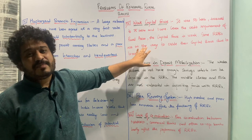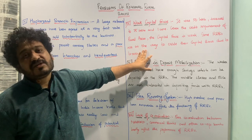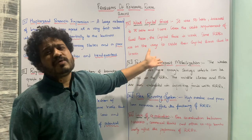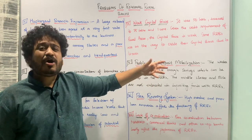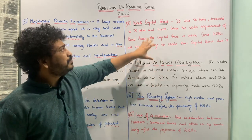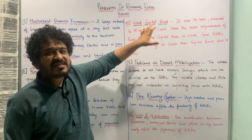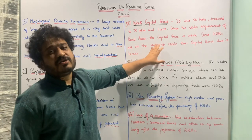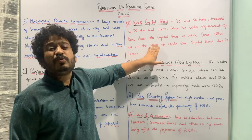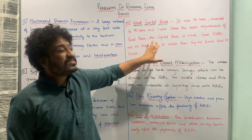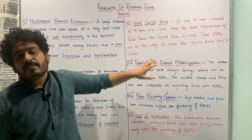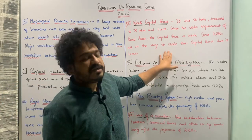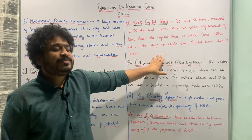Because of the weak capital base, the bank suffers losses as potential consumers move towards other options. Since you cannot lend out everything you have, you tend to lose your consumer base. This is a very important problem associated with regional rural banks in the Indian context. I hope this point is pretty much clear.